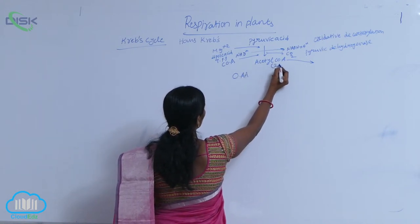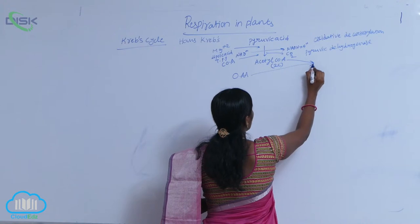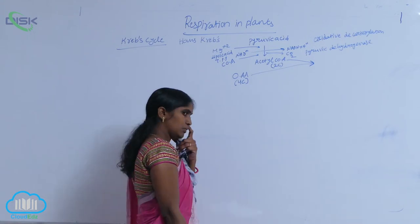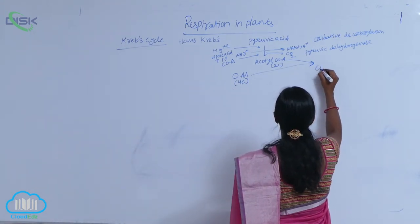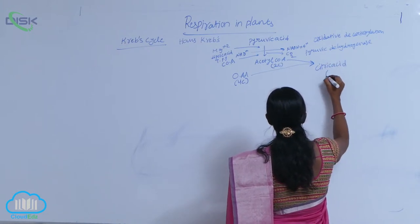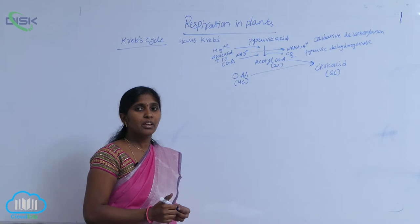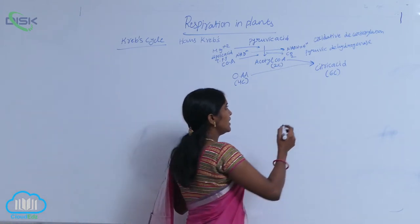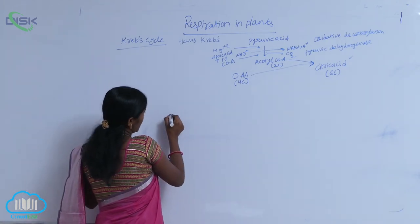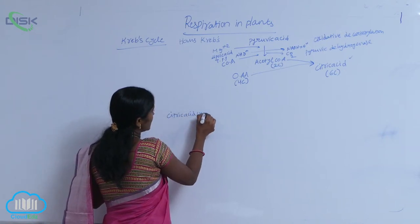Acetyl-CoA is a 2-carbon molecule, and when it is condensed with oxaloacetic acid — a 4-carbon molecule — it then turns into citric acid. Here it is a 6-carbon compound. The first compound formed in the Krebs cycle is called citric acid. Hence, this cycle is also called the citric acid cycle.